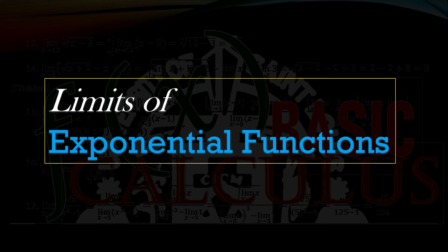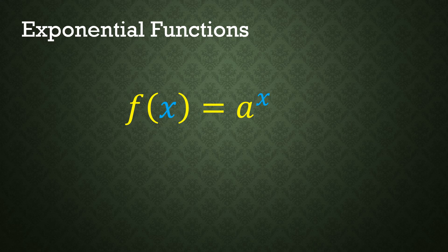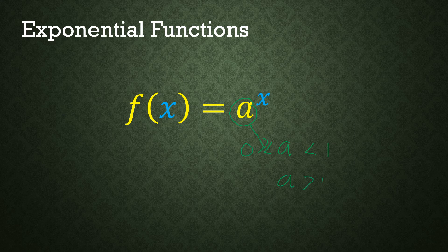The limits of exponential functions can be solved using direct substitution. Reviewing the properties of exponential functions: if f(x) = a^x, this base 'a' must be between 0 and 1, or greater than 1 — meaning it's not equal to 0, not equal to 1, and should not be a negative number. The exponent x is the set of all real numbers, so you can substitute any number.